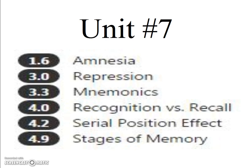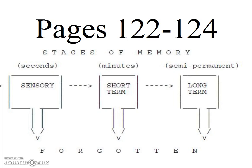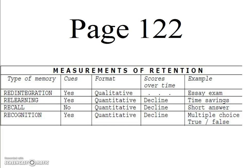In Unit 7, students want to know more about stages of memory. Memory starts with a sensory stage lasting only seconds, and is then encoded into short-term memory, which is then processed into long-term or semi-permanent memory. The other thing students have to remember from this chapter is the different types by which memory is measured. Remember that recognition has the best overall retention.